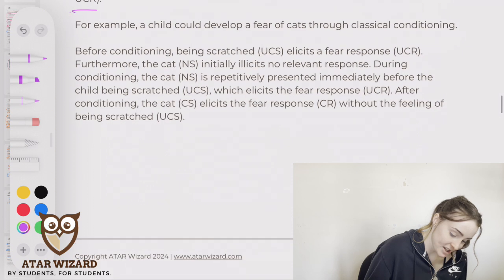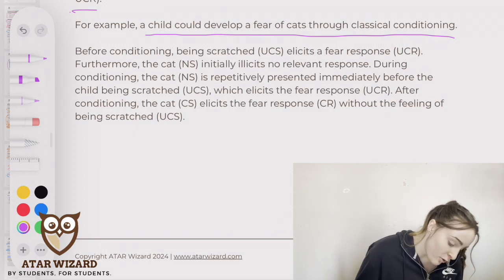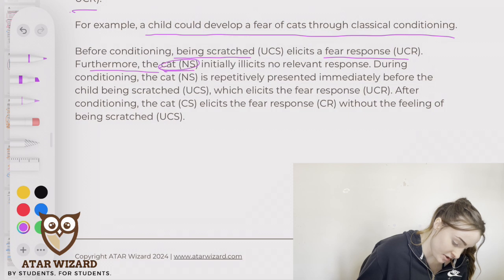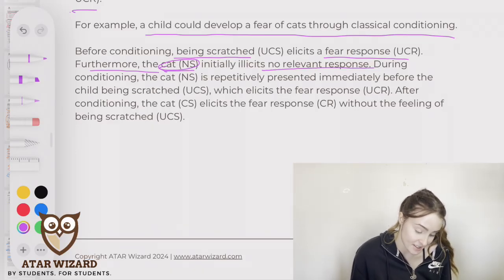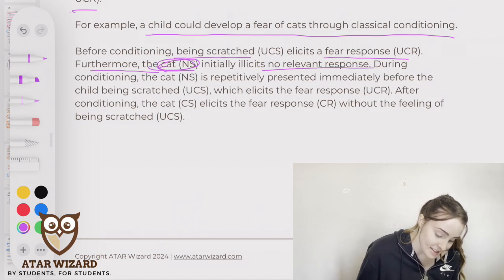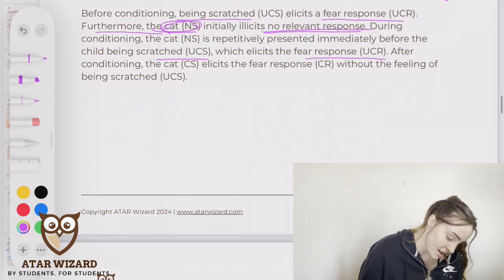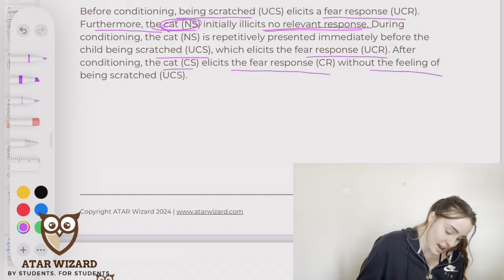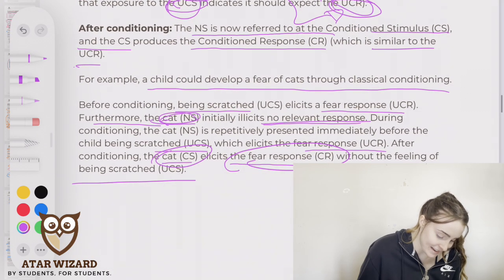Here's a good example: a child could develop a fear of cats through classical conditioning. Before conditioning, being scratched elicits a fear response, and the cat — the neutral stimulus — initially elicits no relevant response. During conditioning, the cat is repetitively presented immediately before being scratched, which elicits the fear response. After conditioning, the cat elicits the fear response without the feeling of being scratched — the child is now scared of cats. And that is classical conditioning.